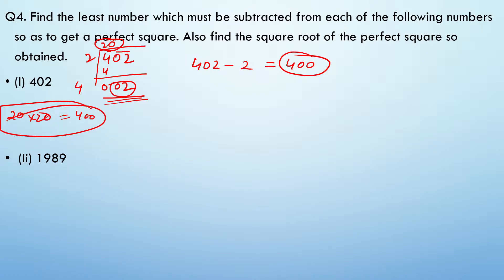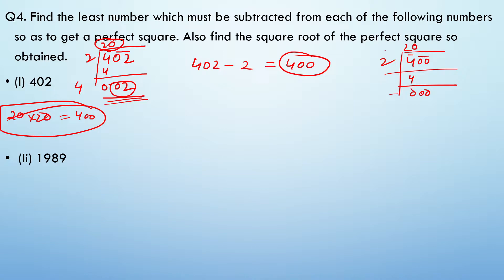The question also asks to find the square root of the perfect square. So we do the same pattern — make a pair: 2, 2, 4. Minus square, zero. The answer is 20.